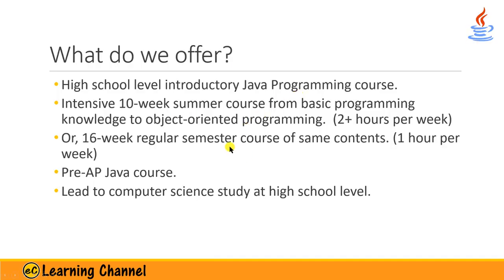What do we offer in this course? This course is a high school level introductory Java programming course. We can have two formats: one intensive 10-week summer course format covering basic programming to object-oriented programming, or a 16-week regular semester course of the same content or some extra material. This is a pre-AP Java course that will lead to computer science study at the high school level and the community college level.